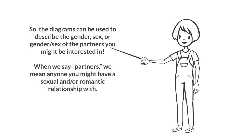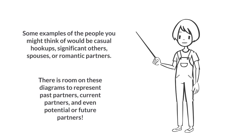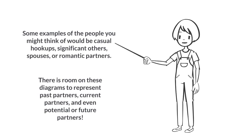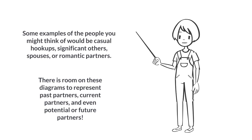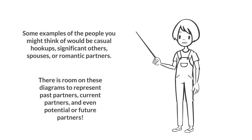When we say partners, we mean anyone you might have a sexual and or romantic relationship with. Some examples of the people you might think of would be casual hookups, significant others, spouses, or romantic partners. There's room on these diagrams to represent past partners, current partners, and even potential or future partners.